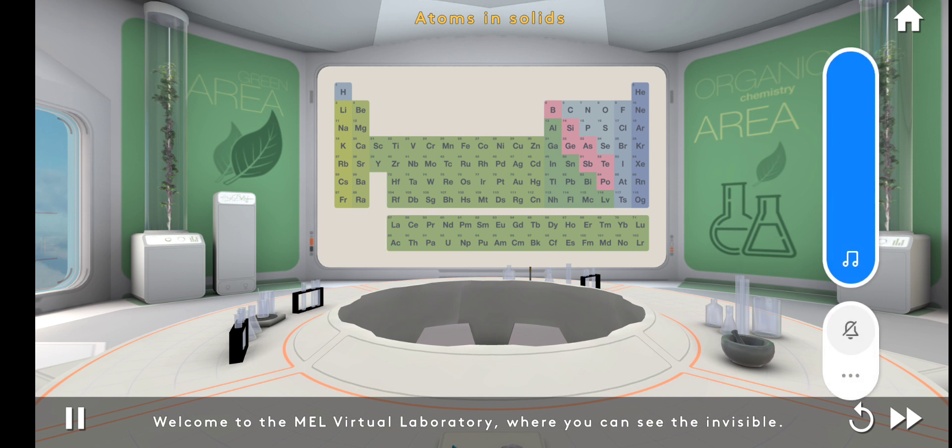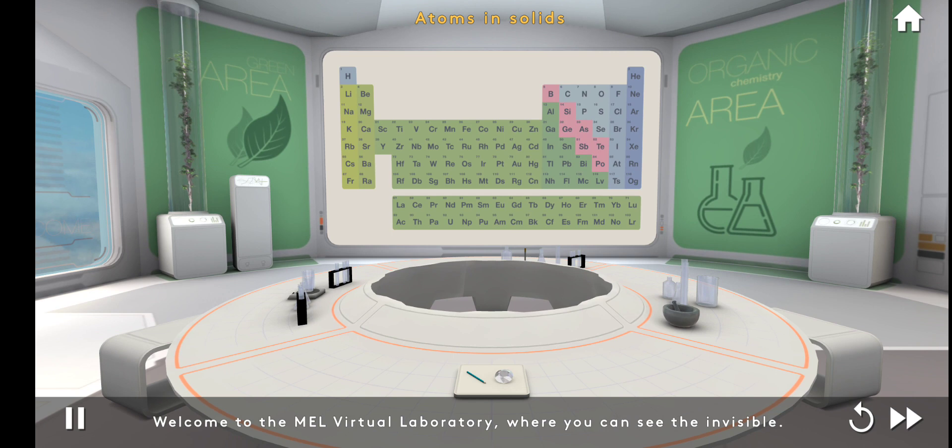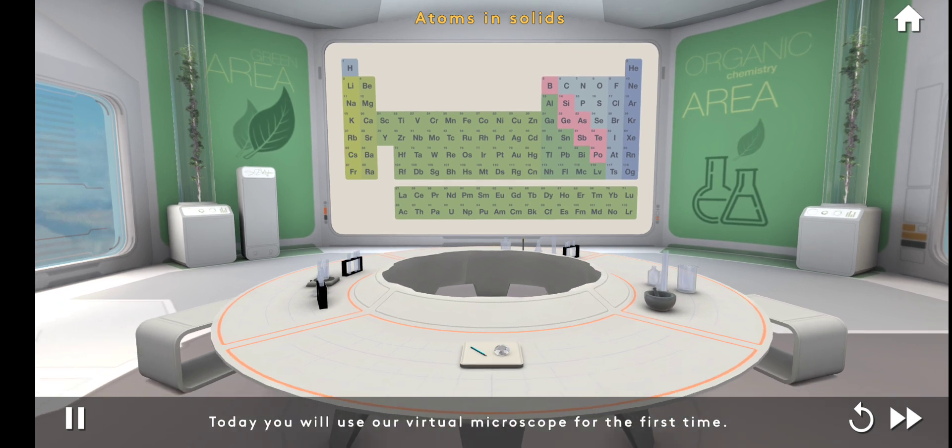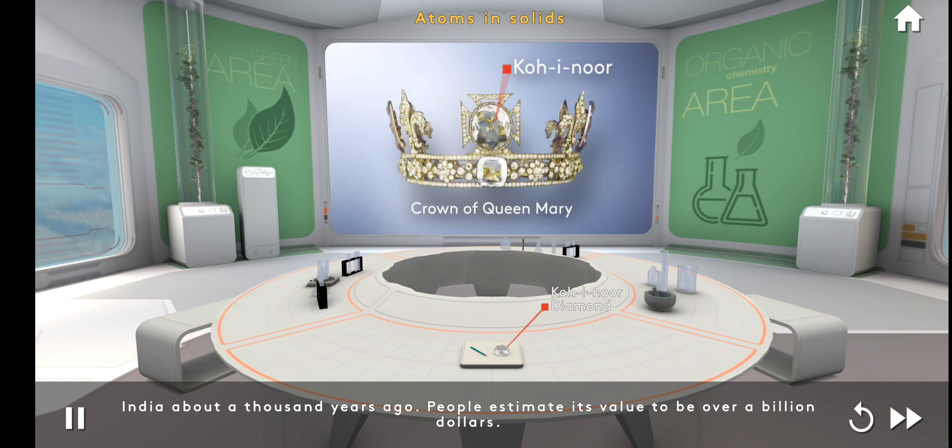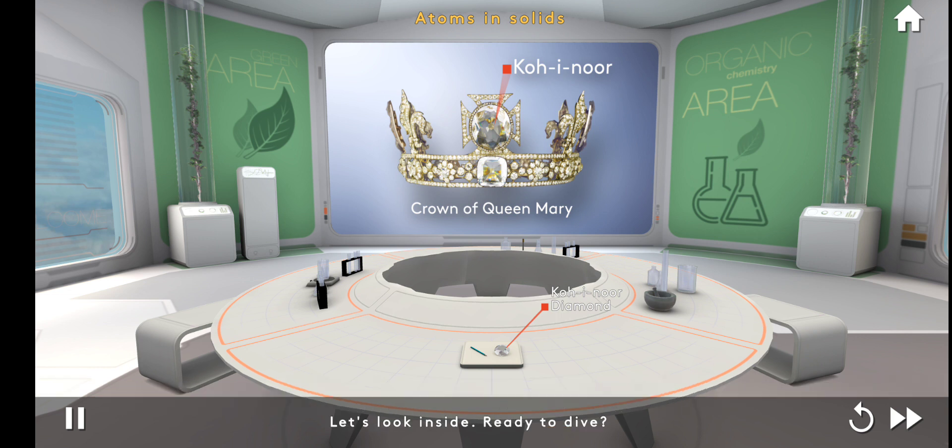Welcome to the MEL Virtual Laboratory, where you can see the invisible. Today you will use our virtual microscope for the first time. We will start with a diamond. This diamond is called the Koh-i-Noor. It was found in India about a thousand years ago. People estimate its value to be over a billion dollars. Let's look inside.